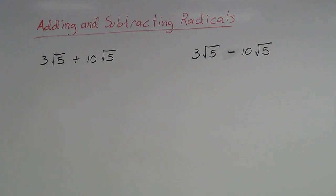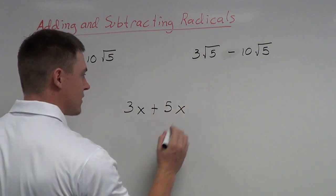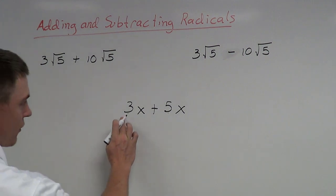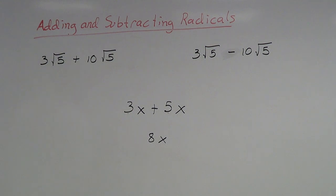Adding and subtracting radicals is actually relatively simple. It's very similar to adding and subtracting variable expressions. For example, if I had 3x plus 5x and I want to simplify that, since I have an x and an x they are like terms, so I add the coefficients — three and five — to get 8x. You can think of it as three x's and five x's making a total of eight x's.